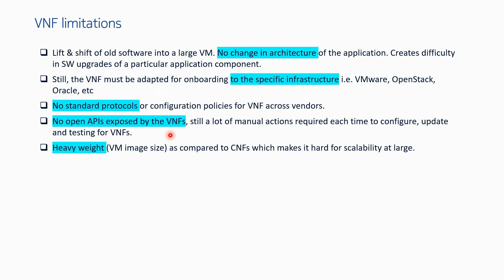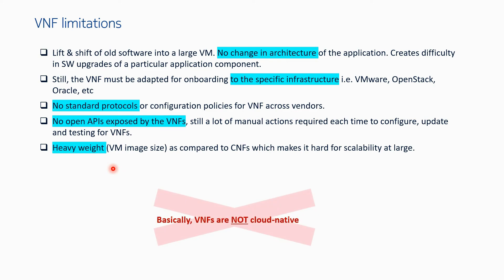VM image size is also a problem. VNFs are groups of VMs, and every VM has a guest operating system, which is an overhead. The image size of a VM can be quite heavy — sometimes 5 GB, 6 GB, or 10 GB. This makes scalability at large difficult. You cannot create 50 or 100 copies of the VNF with a click because you need a lot of disk space.